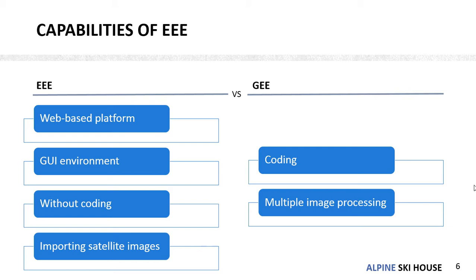In Earth Engine Explorer, you can work with only a single image at a time, whereas in Google Earth Engine, you have the capability to import many images — up to 5,000 images — in the GE environment.